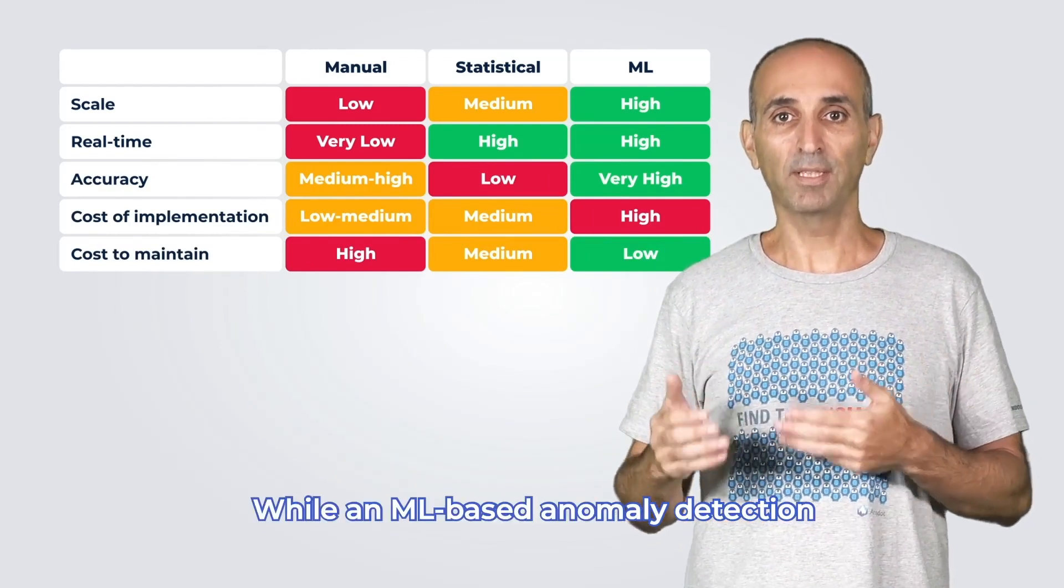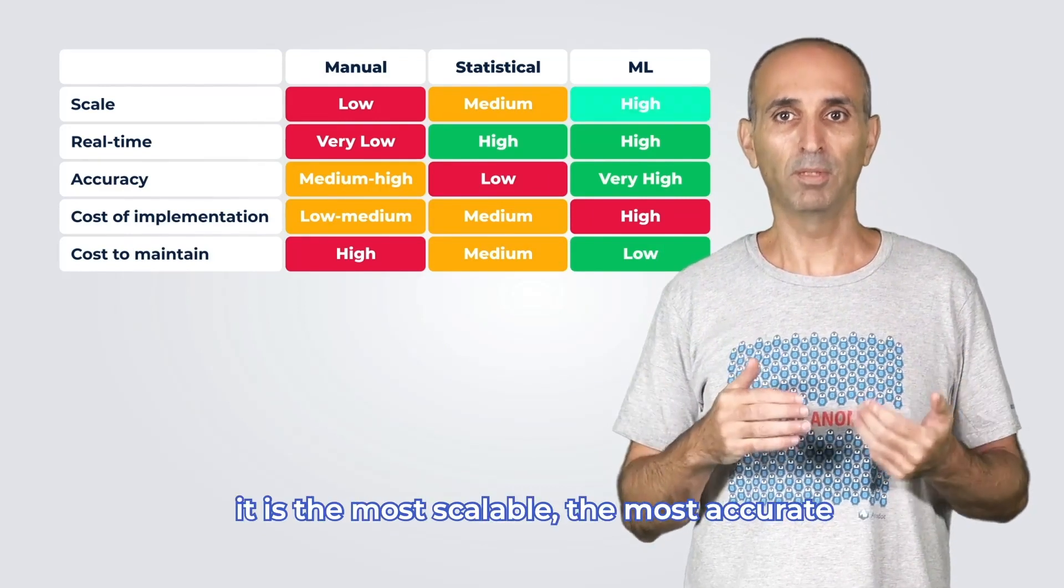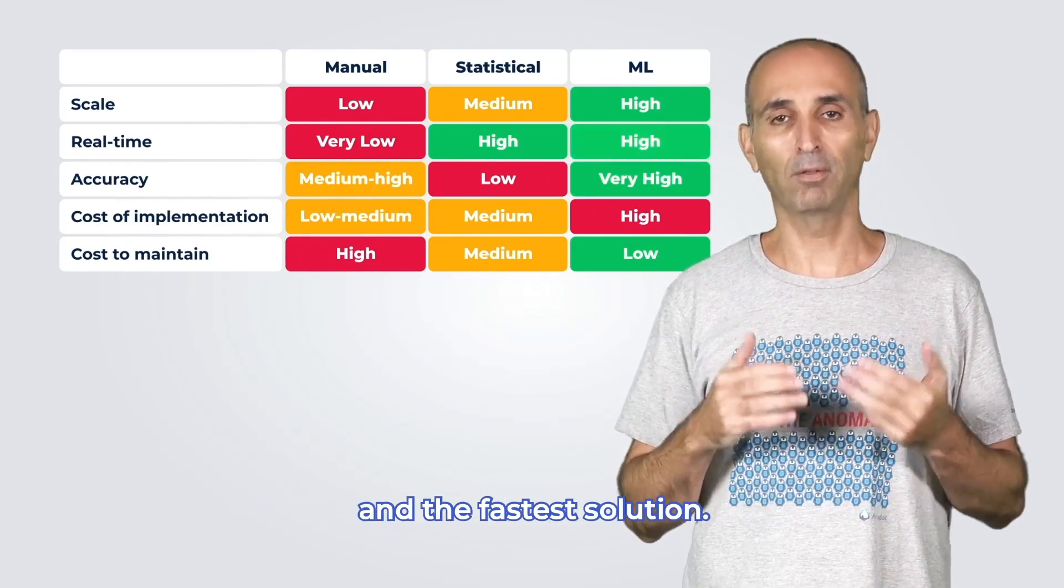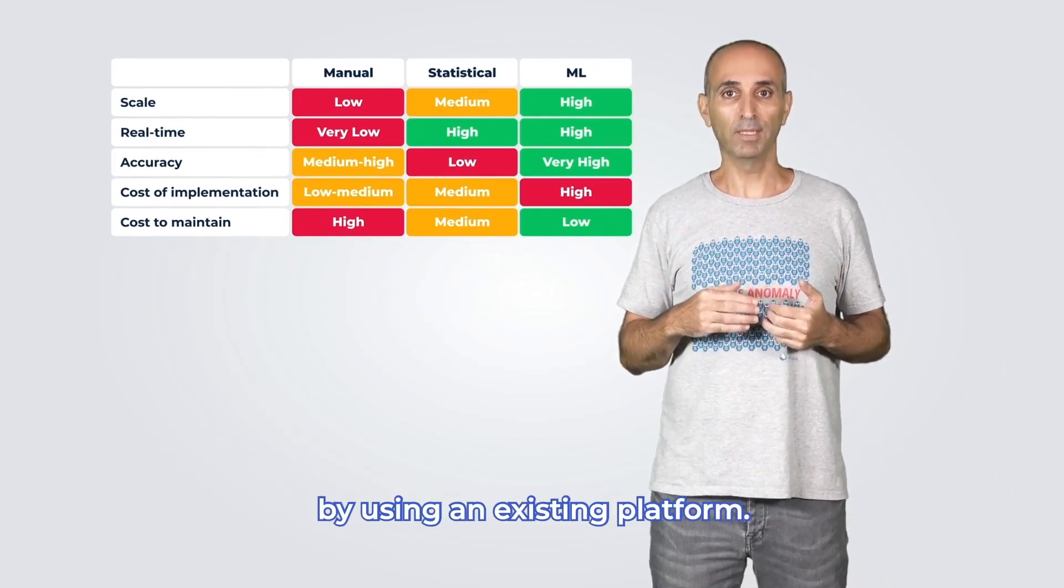While an ML-based anomaly detection is the costliest to build yourself, it is the most scalable, the most accurate, and the fastest solution. You can always avoid the implementation costs by using an existing platform.